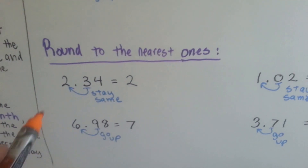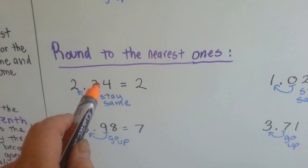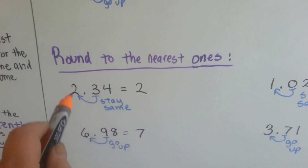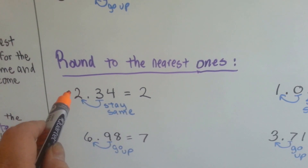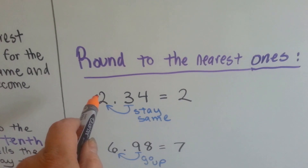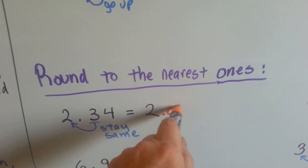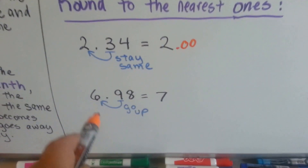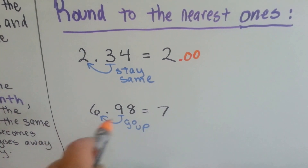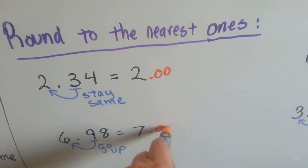If we're going to round to the nearest ones place, then the number to the right of the ones — the three — is going to tell the two what to do. The number in the tenths place is going to tell the number in the ones place what to do. So this is a three, telling the two to stay the same, and we end up with just two. We could have said 2.00, but that's the same thing as two. For this one, the nine told the six to go up to a seven, and then it dropped off or became zeros. Either way is acceptable.